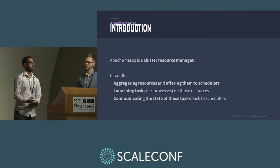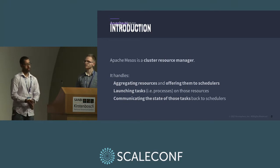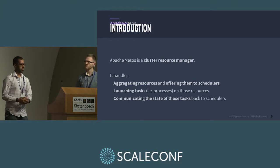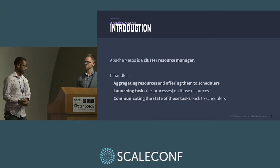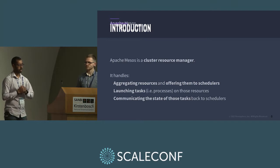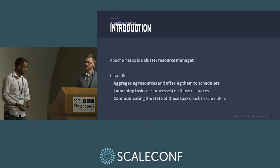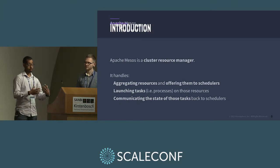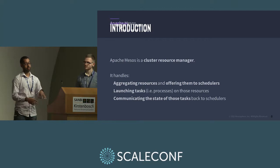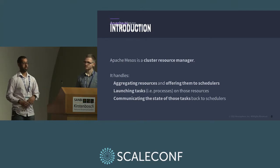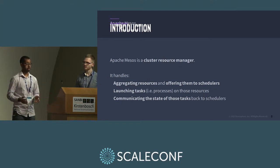Apache Mesos is a cluster resource manager. It's been used in production for about three or four years at Twitter, and it just works — it's a great tool if you're thinking of growing a large infrastructure. What it does is aggregate resources and offer them to schedulers. Schedulers are things that have work to be done, and Marathon is one of those schedulers. Mesos then takes work from those schedulers, launches tasks, and communicates the state of those tasks back — whether the task has failed, been lost, or terminated normally.